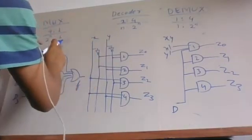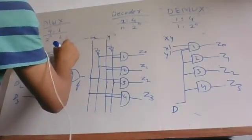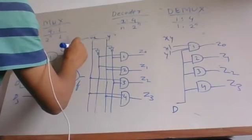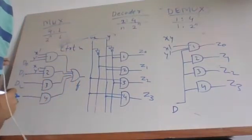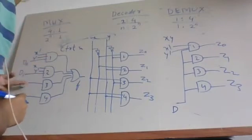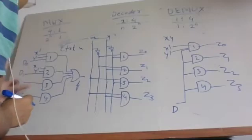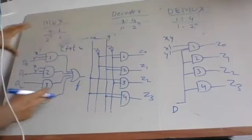Here, XY becomes the control signal. In addition to this control signal, we provide data inputs D0 to the first, D1 to the second, D2 to the third, and D3 to the fourth AND gate. The same decoder circuit is converted into a multiplexer.